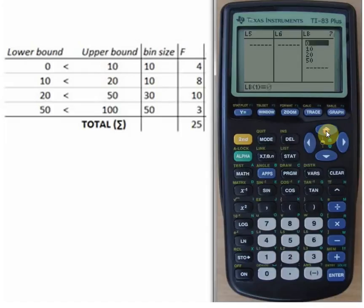Then for the upper bound, I back up. That's going to be UB. Enter. And those are 10, 20, 50, and 100.